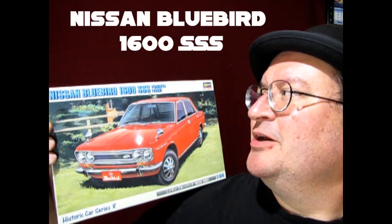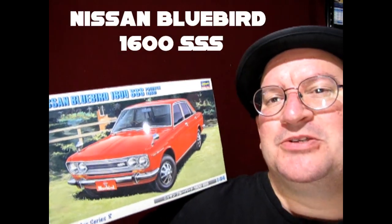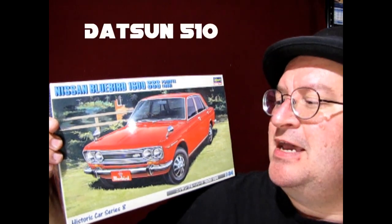Hello everybody and welcome back to another Monster Hobbies model car garage. Today we are unboxing a really cool car. This is the Nissan Bluebird 1600 SS or as we knew it over here in North America as the Datsun 510. This is a Hasegawa kit and it's gonna be a lot of fun. So without further ado let's go down to the bench and see what's in the box.